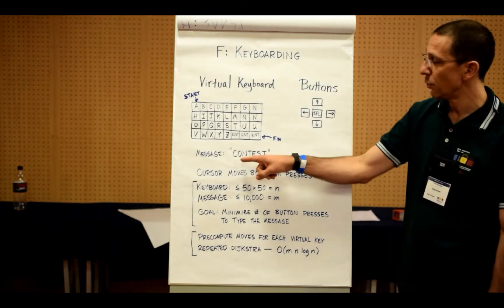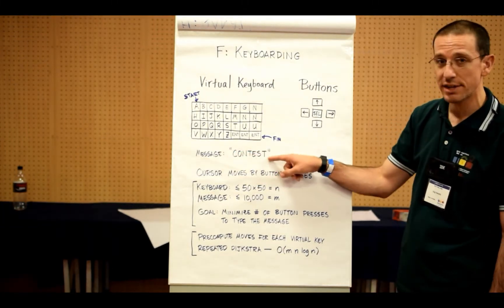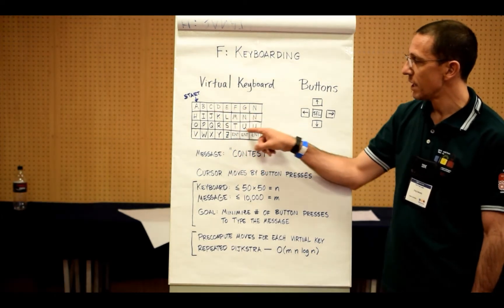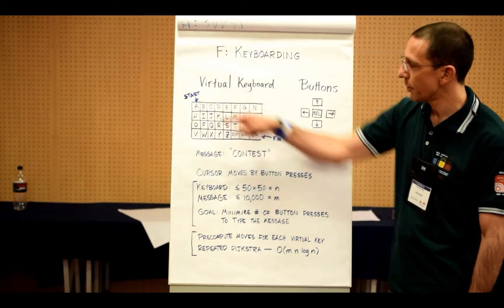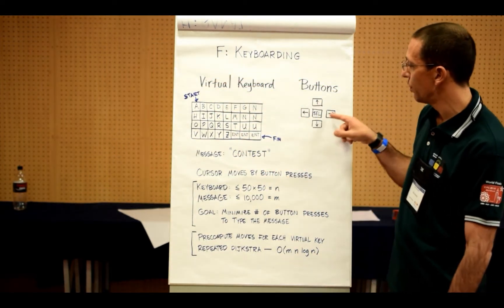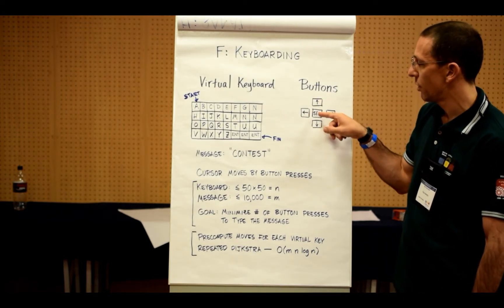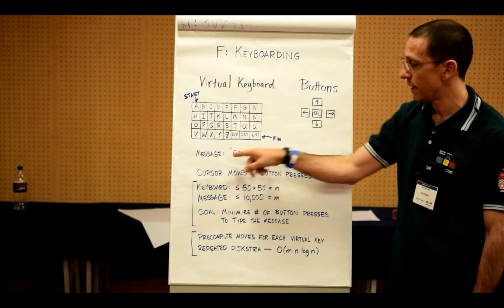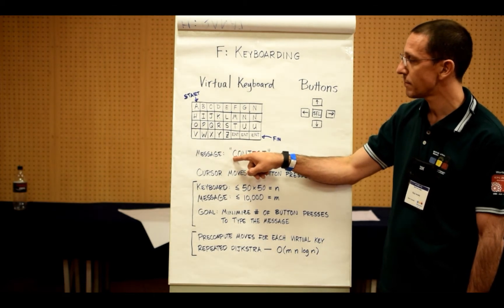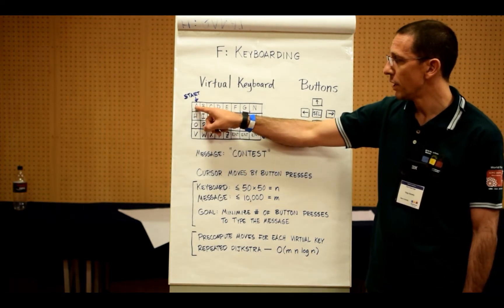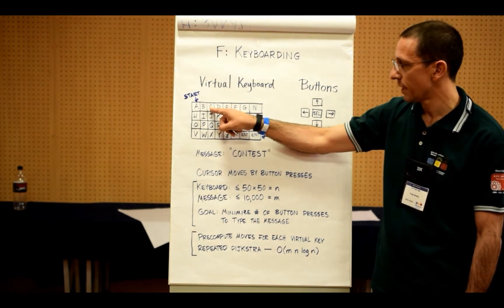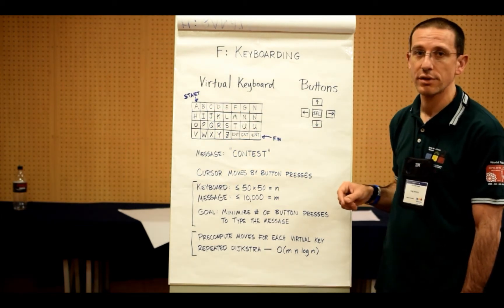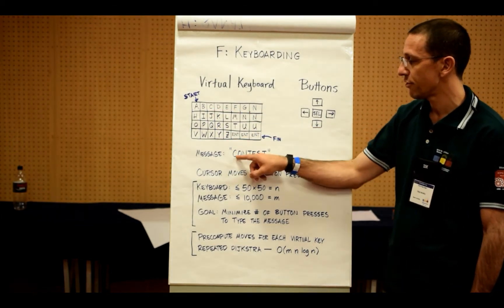In this case you want to produce the message 'contest'. So let's see how you produce the message 'contest' with this given keyboard layout. Starting in the upper left hand corner, we can move right, down, left, up, or select the current button. Selecting it makes the letter appear in the message. Starting here we can move right, right and select C, resulting in three button presses so far to produce the letter C.